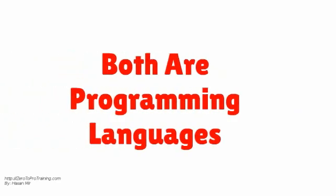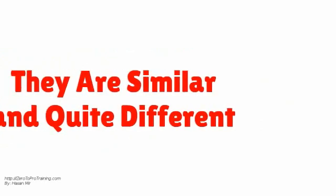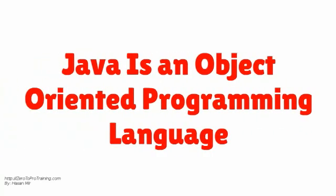Both Java and JavaScript are programming languages. They are similar and quite different, depending on how you look at them. Java is an object oriented programming language.